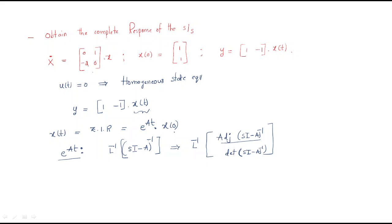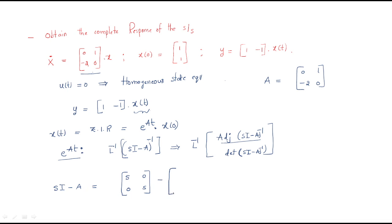First, what is sI - A? We identify A = [0, 1; -2, 0] from the equation ẋ = Ax. Then sI - A = [s, 0; 0, s] - [0, 1; -2, 0] = [s, -1; 2, s]. This is a 2×2 matrix.